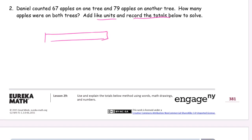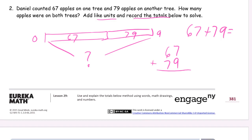We had this is one tree, 67 apples. And this is the 79 on another tree. Both trees together. How many apples? So it's 67 plus 79 equals. Sixty-seven, seventy-nine.